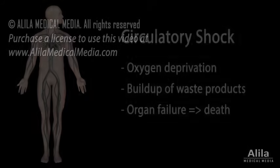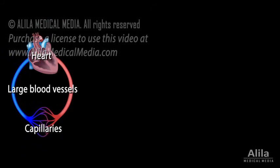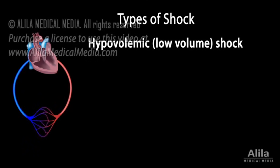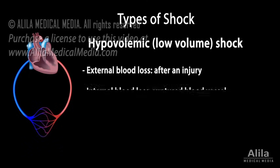Shock may have different causes and hence its classification into different types. Hypovolemic, or low-volume shock, happens when the circulatory blood volume is severely reduced. This can be caused by external blood loss, such as after an injury, internal blood loss, such as that results from a ruptured blood vessel,